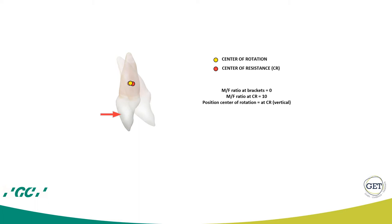The moment will be 10 gram-millimeters divided by the force of one gram, giving a ratio of 10. The center of rotation will be approximately at the level of the center of resistance, producing a movement called uncontrolled tipping.